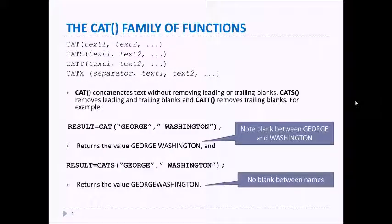The first function we'll look at is the CAT family of functions. As you can see listed here, the CAT function concatenates text without removing leading or trailing blanks, CATS removes leading and trailing blanks, and CATT removes trailing blanks. So whichever version you need is the one you should use.